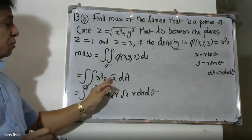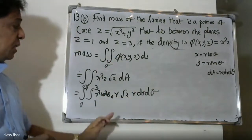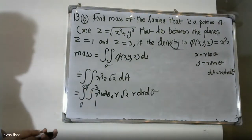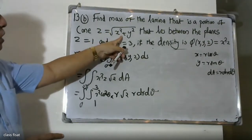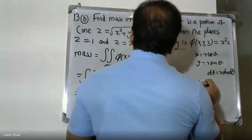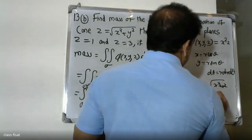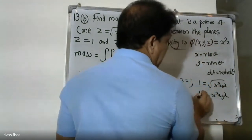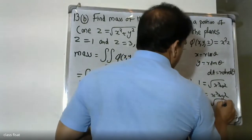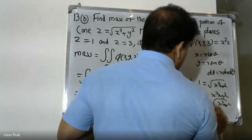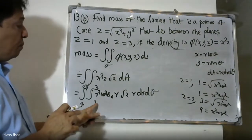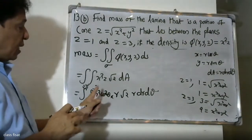Looking at the limits: z = 1 gives √(x² + y²) = 1, which is a circle of radius 1, and z = 3 gives √(x² + y²) = 3, a circle of radius 3. So r goes from 1 to 3, and θ goes from 0 to 2π covering the full circle.